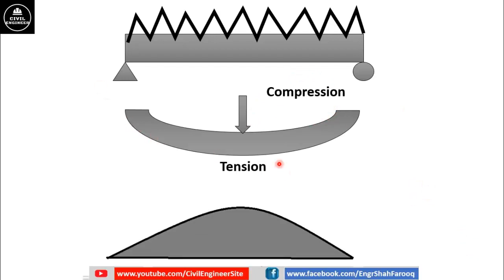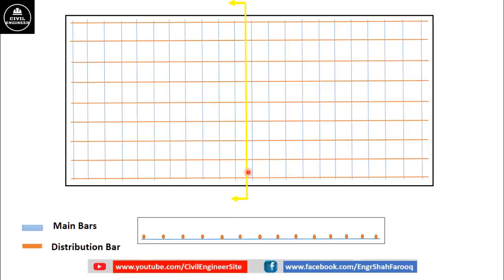The bending moment diagram for this slab will be like this. As we know, concrete is strong in compression but very weak in tension. To resist this tension or tensile stresses, we have to provide steel reinforcement. This is the reason that most of the time steel reinforcement is provided at the bottom of the slab — because at the bottom fiber tensile stress exists, and concrete is very weak in tension. To enhance the tensile strength of the slab, we have to provide steel reinforcement.